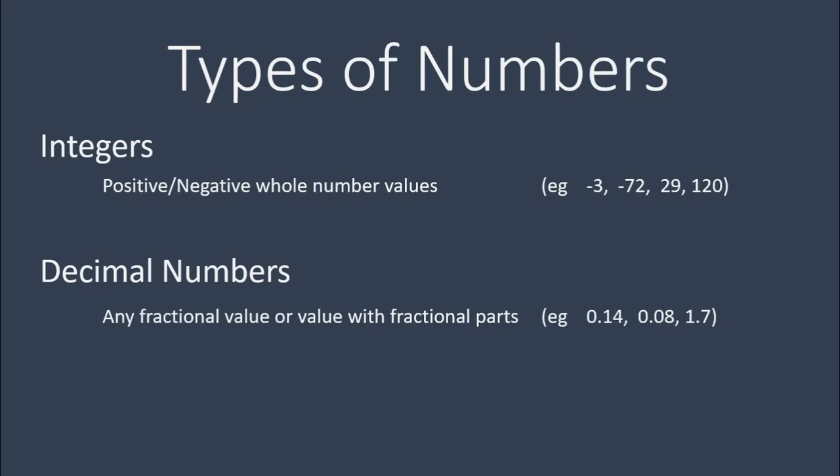Decimal numbers represent any fractional value or a value with a fractional part. So for example, 0.14, or 14 hundredths — that is taking one whole, cutting it into 100 parts and having 14 of those parts. Or 0.08, which is 8 hundredths — again, taking one whole, cutting it into 100 parts and keeping 8 of those parts. 1.7, however, is one whole and then it's got a decimal part. It's like a mixed number: 1 and 7 tenths — one whole number and taking another whole, chopping it into 10 parts and keeping 7 of those parts. These are all decimal numbers.